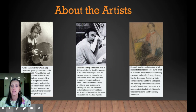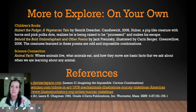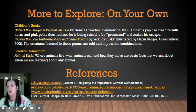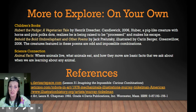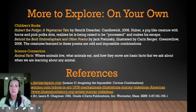Here's about today's artists — you could go on the internet and find more information on these three artists. And more to explore on your own: a couple of interesting looking books. The first one's called Hubert the Pudge, A Vegetarian Tale, and the second one is called Behold the Bold Umbrella Phant and Other Poems. You could also go more in depth with science — animal facts: where animals live, what animals eat, and how they move are basic facts that we ask about when we are learning about any animal.